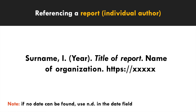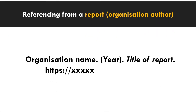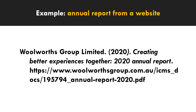When referencing a report, it looks a little different. You'll have the surname of the author if there is one, the year of publication, the title of the report, the name of the organization that commissioned the report, and the URL to access it. If no date can be found, use 'n.d.' in the date field. If the author is an organization, you replace the surname and initial with the organization name — the same goes for websites authored by organizations. For example, Woolworths Group Limited's annual report shows the company name, then the year, then access details.